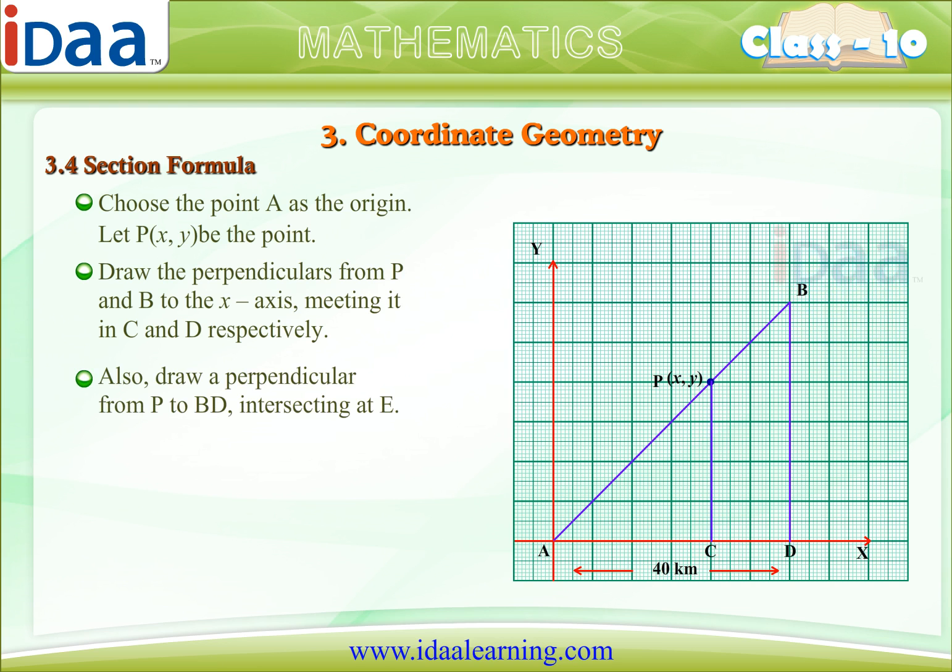Also, draw a perpendicular from P to BD intersecting at E. From the figure, we have AC is equal to x, PE is equal to 40 minus x, PC is equal to y, and BE is equal to 20 minus y.